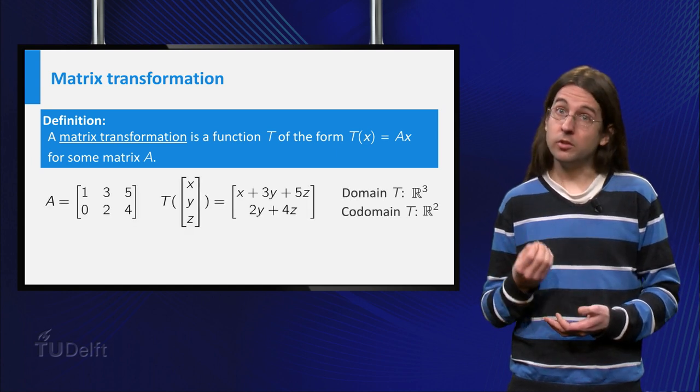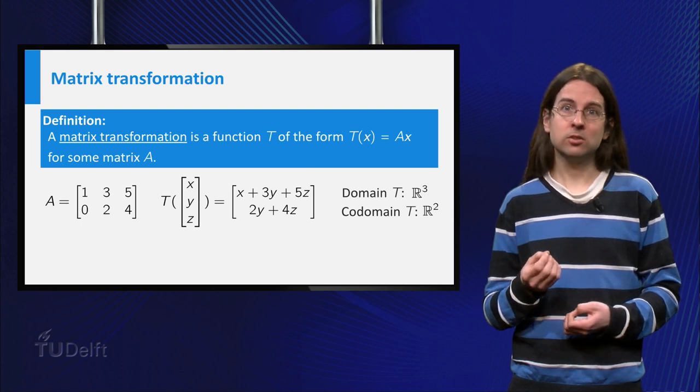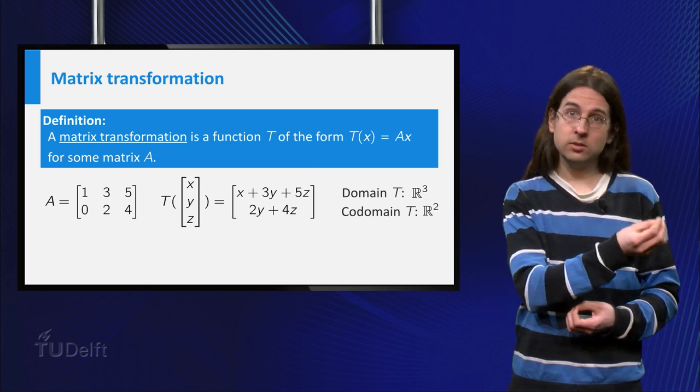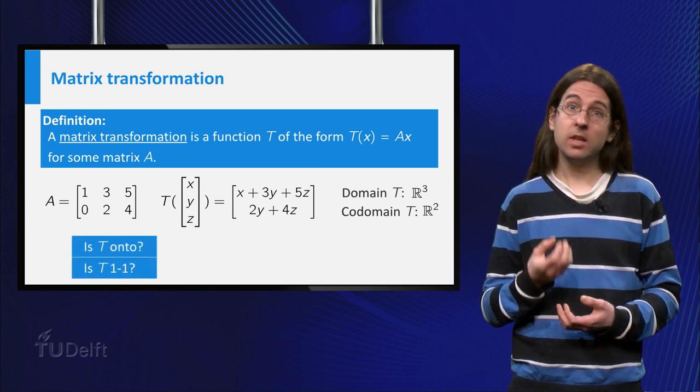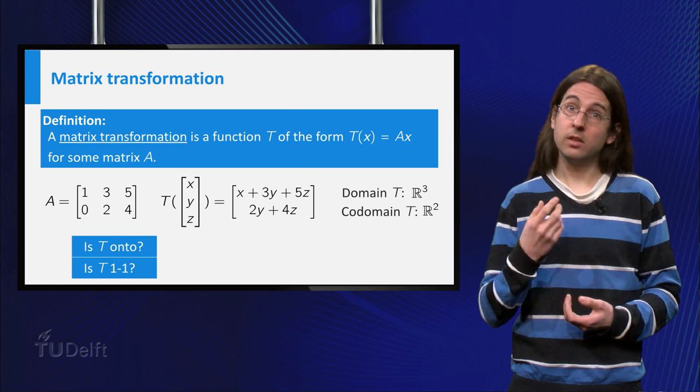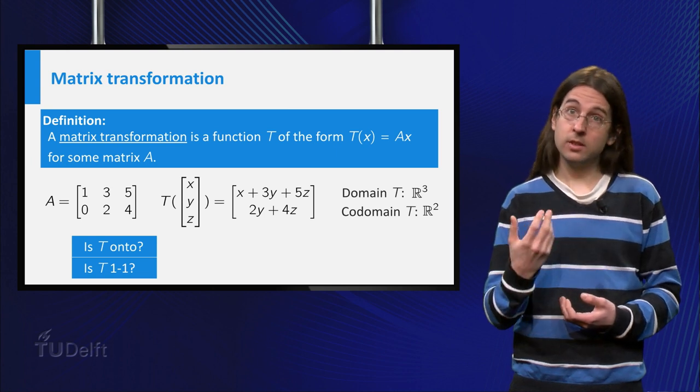The example on the slide is a transformation which maps vectors in R³ to vectors in R². For this function we can now ask the questions whether it is onto and whether it is 1-to-1.